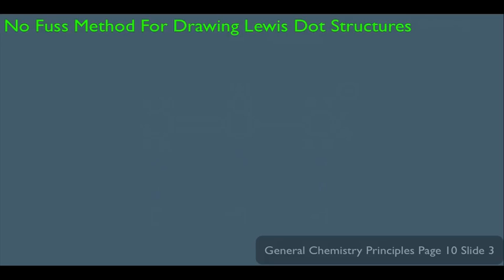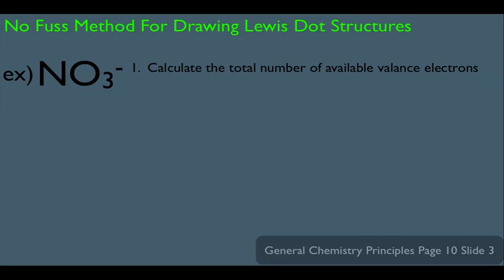Let's look at the no-fuss method first. For instance, let's say you need to draw the Lewis dot structure of NO3 minus. Remember that minus means the molecule has an overall negative charge. The first step in this process is to calculate the total number of available valence electrons.